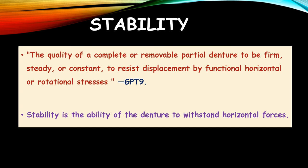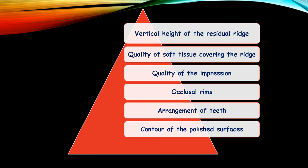Stability, as defined by the Glossary of Prosthodontic Terms 9th edition, is the quality of a complete or removable partial denture to be firm, steady, or constant to resist displacement by functional, horizontal, or rotational stresses. The various factors affecting stability are: vertical height of the residual ridge, quality of the soft tissue covering the ridge, quality of the impression, occlusal rims, arrangement of teeth, and contour of the polished surfaces. These will be dealt with in further episodes.